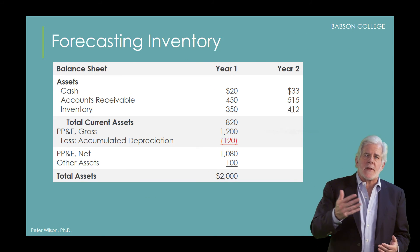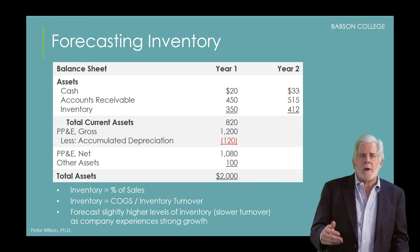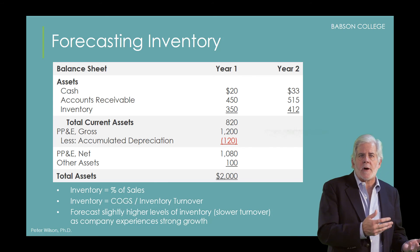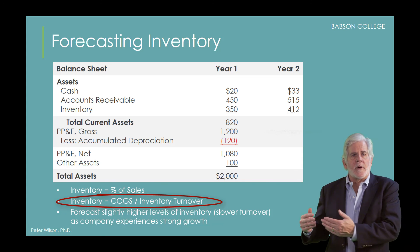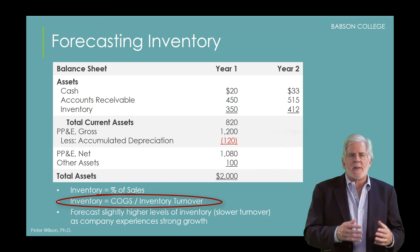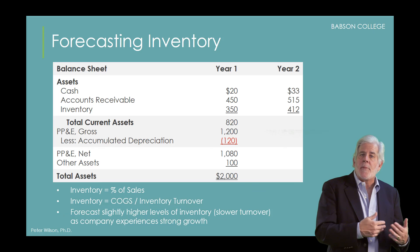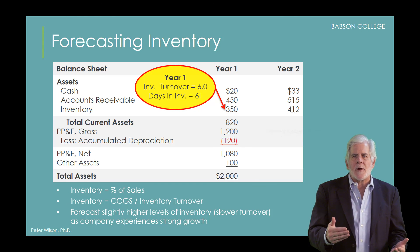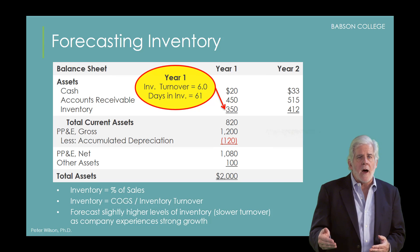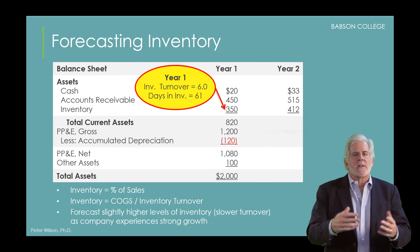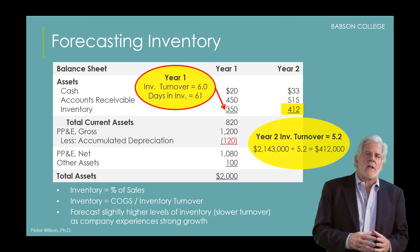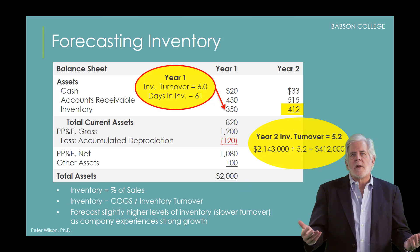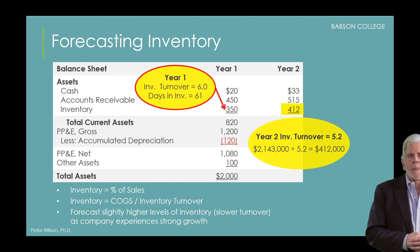Inventory can be forecasted along the same lines as accounts receivable, either as a percent of sales or based on the inventory turnover ratio. The formula for forecasting inventory based on the inventory turnover ratio is: inventory equals cost of goods sold divided by the inventory turnover ratio — the exact same approach used when forecasting receivables. Following the same logic, we can assume that Nebco will not be able to increase inventory turnover at a time when they are trying to accelerate their growth and expand production. Thus, we will forecast a decrease in the inventory turnover ratio from 6 to 5.2, leading to an increase in inventory from $350,000 to $412,000.